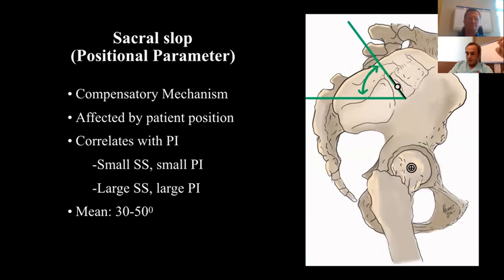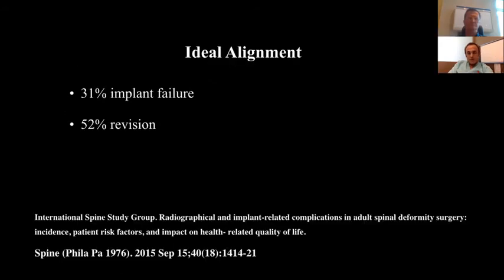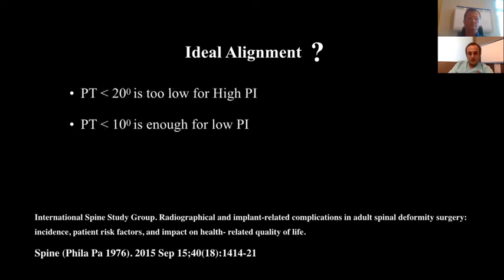John Charles described the pelvic parameters very well, and Richard will talk about that. We need ideal alignment, but what is ideal alignment? The International Spine Study Group has published a paper on this. Even if you have ideal alignment, why do we still have implant failure and 50% revision surgeries? The answer depends on the patient. If a patient has high pelvic incidence, a pelvic tilt less than 20 degrees is too low. If a patient has low pelvic incidence, you have to get pelvic tilt less than 10 degrees.